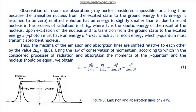Observation of resonance absorption of gamma rays in nuclei was considered impossible for a long time, because when the nucleus transitions from the excited state to the ground state with energy E, the emitted gamma photon has an energy E_γ slightly smaller than E due to the recoil of the nucleus in the process of radiation: E_γ = E − E_R, where E_R is the kinetic energy of the recoil nucleus. Upon excitation of the nucleus and its transition from the ground state to the excited state with energy E, the gamma photon must have energy E_γ* = E + E_R, where E_R is the recoil energy that the gamma quantum must transmit to the absorbing nucleus. Thus the maxima of the emission and absorption lines are shifted relative to each other by the value 2E_R (figure 8).